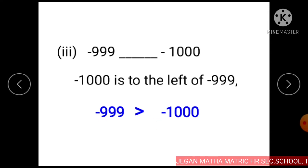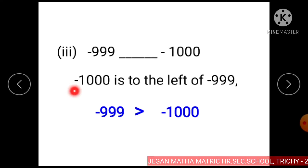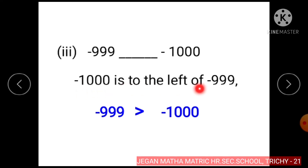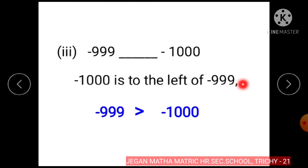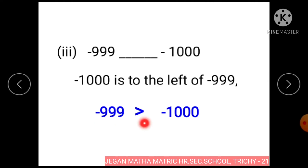Subdivision 3: Minus 999 and minus 1000. Minus 1000 is to the left of minus 999 on the number line. So minus 999 is greater than minus 1000.